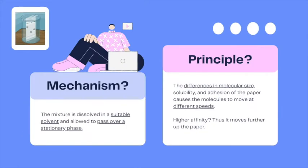Well, how does it work? So, the mixture is dissolved in a suitable solvent or mobile phase and allowed to pass over a stationary phase. This is known as the porous chromatography paper which restricts the movement of macromolecules.